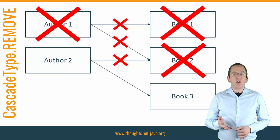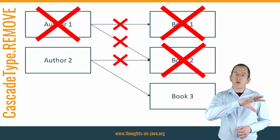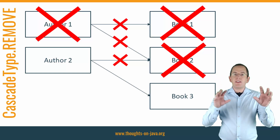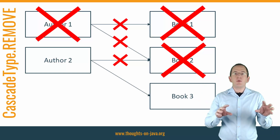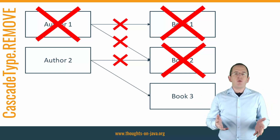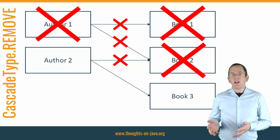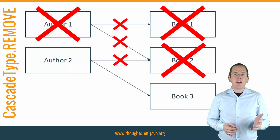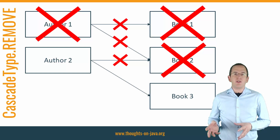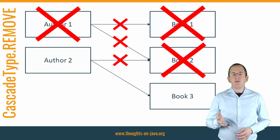And it gets even worse if you also activate CascadeType Remove on the Book-Author association. Hibernate would then cascade the remove operation until it removed all associated author and book entities. This can easily remove a huge part of your database. I explain the pitfalls of CascadeType Remove in much more detail in my article 'Why you should avoid CascadeType Remove for too-many associations and what to do instead.' I'll add a link to it in the video description.